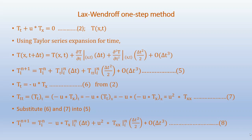From the convection equation, we get T_t equals minus u times T_x, and T_tt equals (T_t)_t equals minus u times T_xt equals minus u times T_tx. Therefore T_tt equals u² times T_xx. Substituting these into the Taylor series, we get T_i^{n+1} equals T_i^n minus u times T_x_i^n times Δt plus u² times T_xx_i^n times Δt² over 2, plus terms of order Δt³.